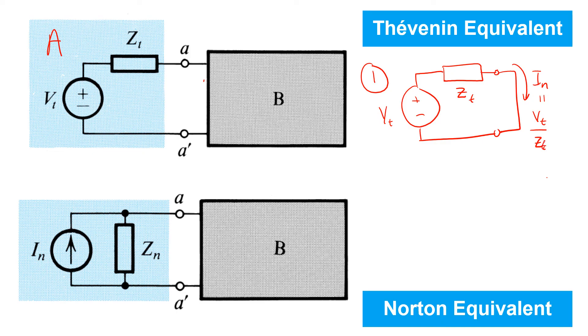Step two would be to find the output impedance of the network A. So to do this, we take all the independent sources inside A and replace them with zero. In this case, there's one independent source, and that's Vt.